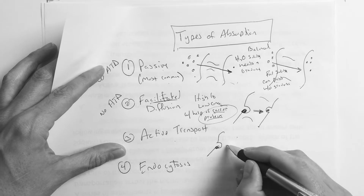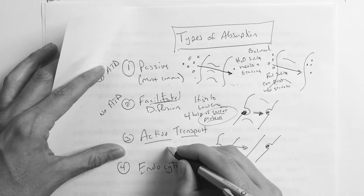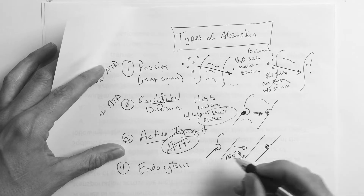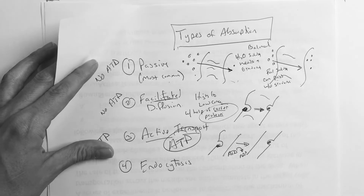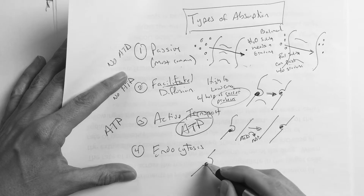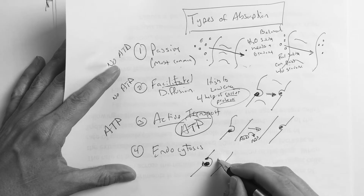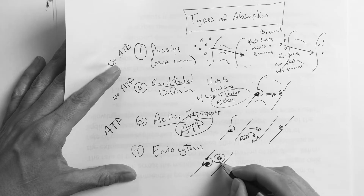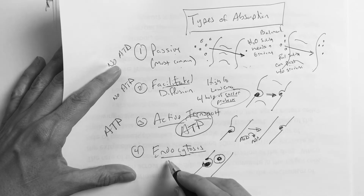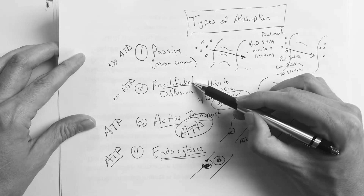Active transport also uses a carrier protein, but to make it happen it is ATP-dependent — it requires energy, converting ATP to ADP. Endocytosis is the last type: material gets engulfed or absorbed, becomes internalized as a vesicle, and is transferred across. When you see the word 'engulfment' or transport due to size, think endocytosis. This one is also ATP-dependent.